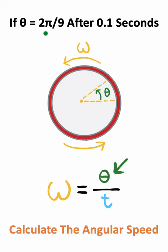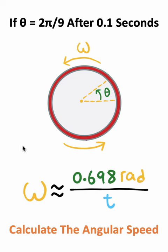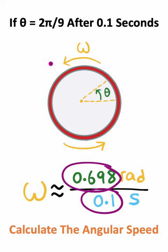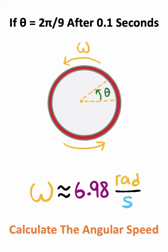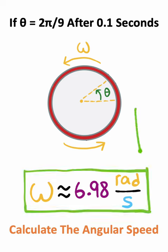The angular distance is 2π/9 radians, which on a calculator is approximately 0.698. The time is given to us as 0.1 seconds. 0.698 divided by 0.1 gives 6.98 radians per second, and that is the angular speed.